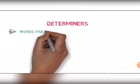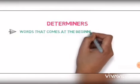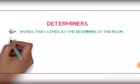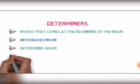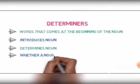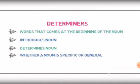Please watch it and try to understand it well. Determiners are words that come at the beginning of a noun, hence they basically introduce a noun. They determine the noun, i.e., whether a noun is specific or general. These are the four important things that you must understand about determiners.